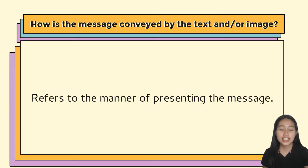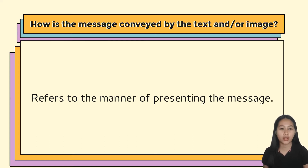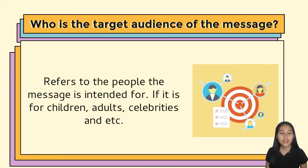Next, how is the message conveyed — by a text or by an image? This refers to the manner of presenting the message. It can be through multimodal text such as spatial, audio, linguistic, or visual. It can also be through icons or symbols. Next, who is the target audience of the message? The target audience refers to the people the message is intended for — it can be children, adults, and many more — and corresponds to the receiver.